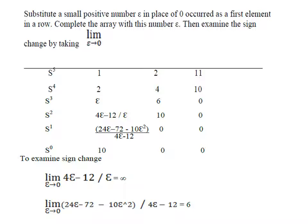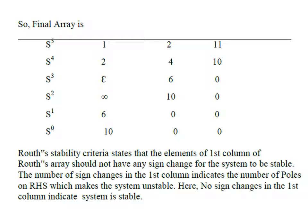Putting the values into the Routh array, the first column becomes: 1, 2, ε, −∞, 6, 10. Observing the first column, there is no sign change. Therefore the system is stable.